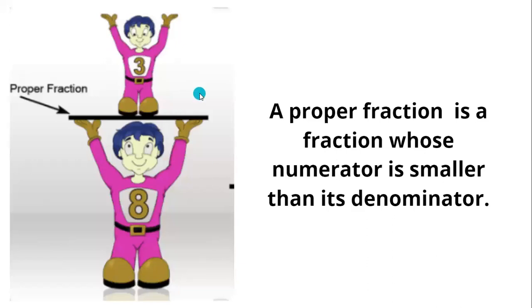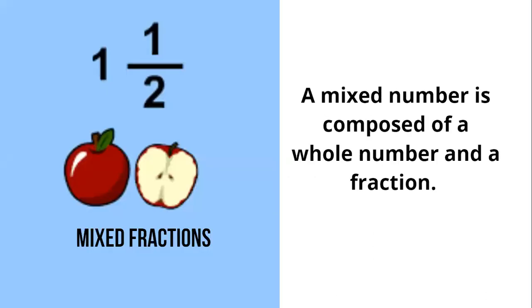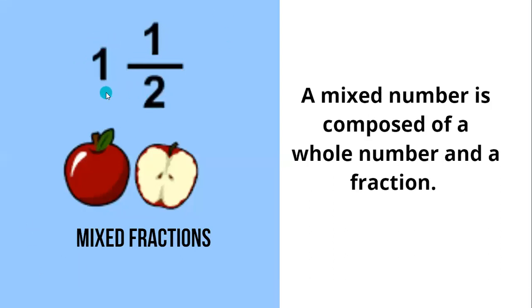Now, types of fractions. A proper fraction is a fraction whose numerator is smaller than the denominator. For an improper fraction, if the numerator is bigger than the denominator, then it is called an improper fraction. A mixed fraction is a combination of a whole number and a fraction — that is called a mixed fraction.